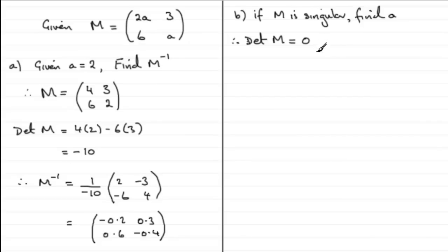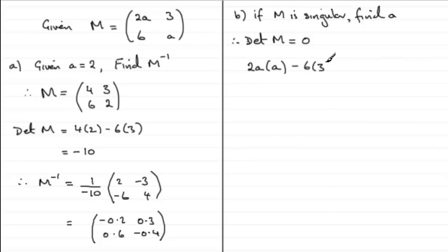And the determinant, remember, is this leading diagonal minus the product of this trailing diagonal. So what we have is that 2A multiplied by A minus 6 times 3 should equal 0. So in other words, we therefore have 2A squared minus 18 equals 0.